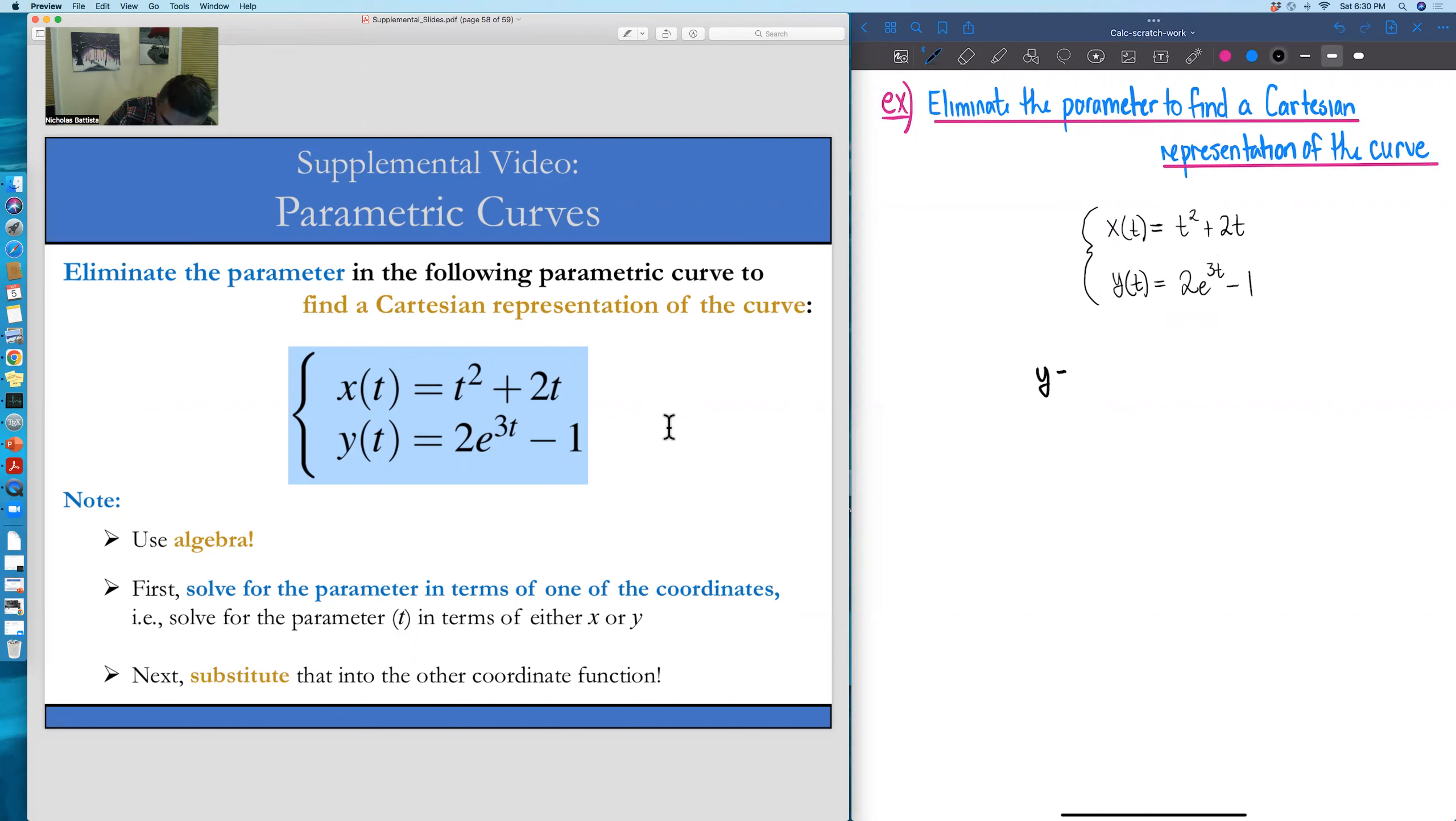So we have y is equal to 2e to the 3t minus 1. And again, what we're going to first try to do is figure out what t is in terms of y. So our goal is to find t equals something in terms of y.